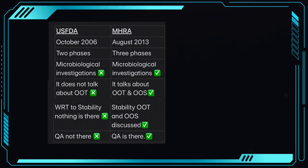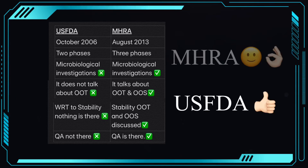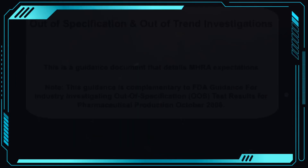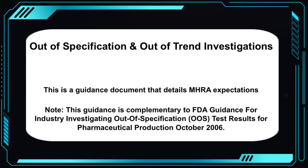So these were the eight differences between the USFDA and MHRA OOS guidelines. From these differences we can easily conclude that the MHRA guideline is better than the USFDA guidance, because the MHRA guideline has tried to cover all the points not present in the USFDA guideline — such as microbiological investigations, stability sample OOS and OOT, and the confidence limit concept. Finally, one more important point given at the end of the MHRA guideline: